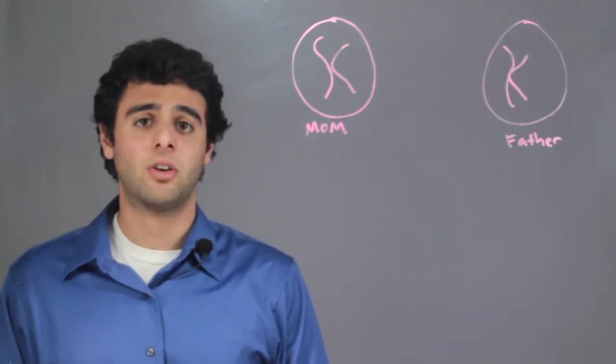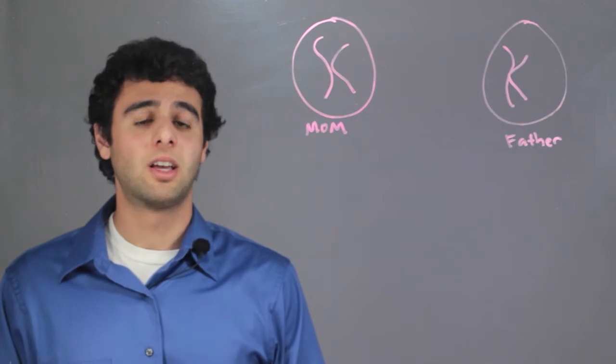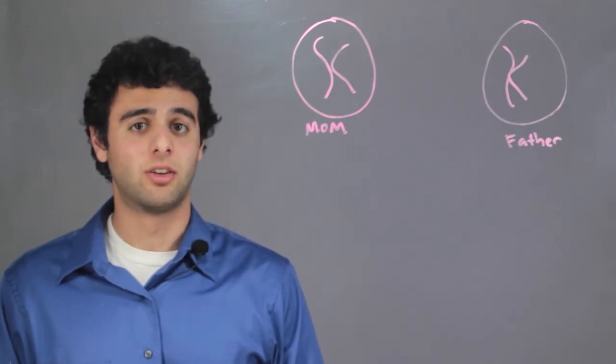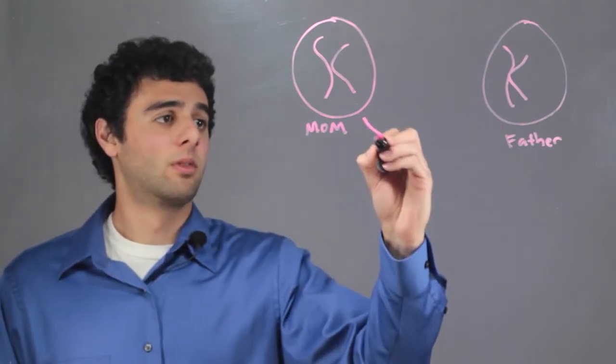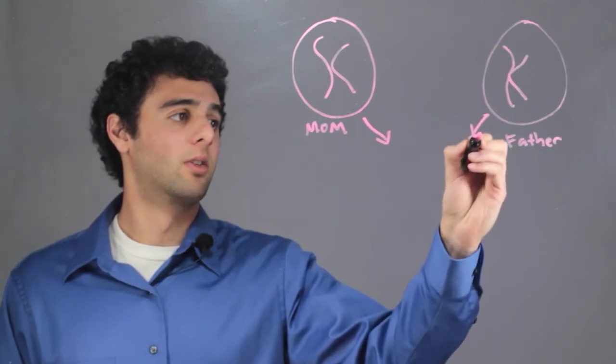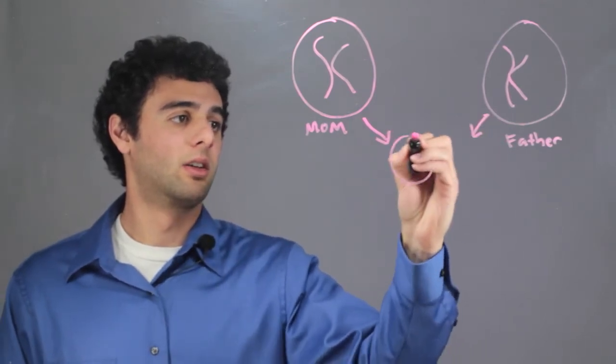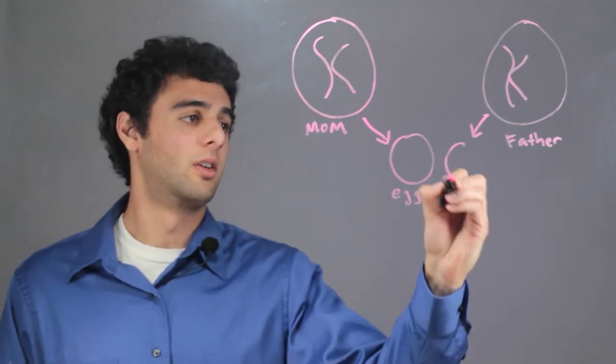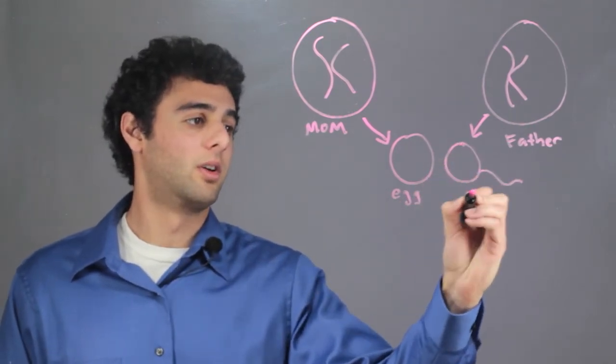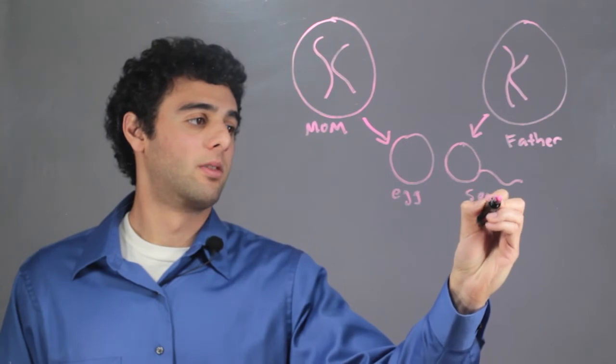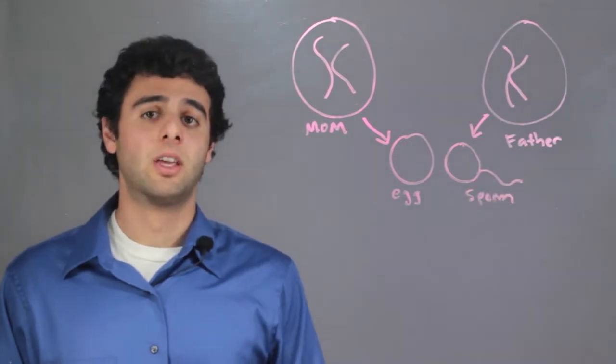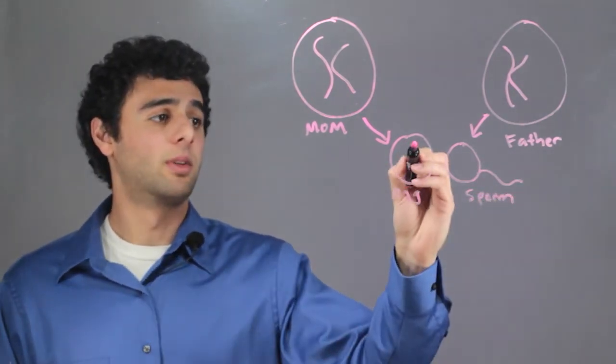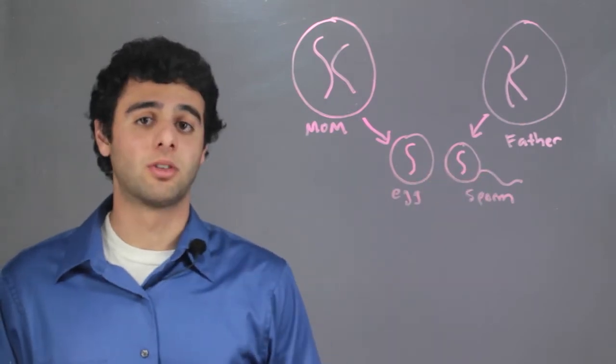The mother and the father will each donate one set of chromosomes to the child. Through meiosis we get an egg from the mother and a sperm from the father. The egg and the sperm each contain one set of chromosomes.